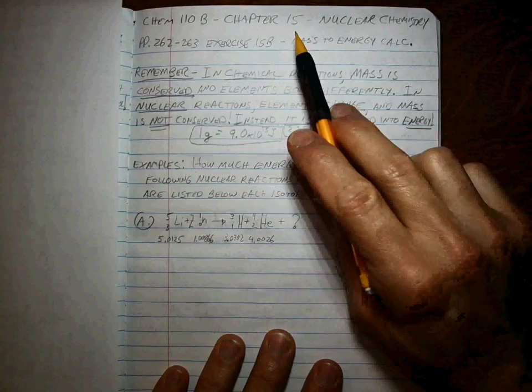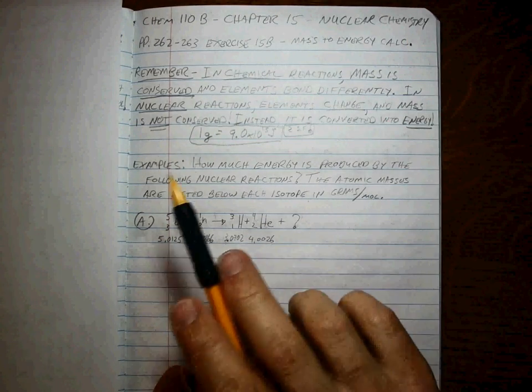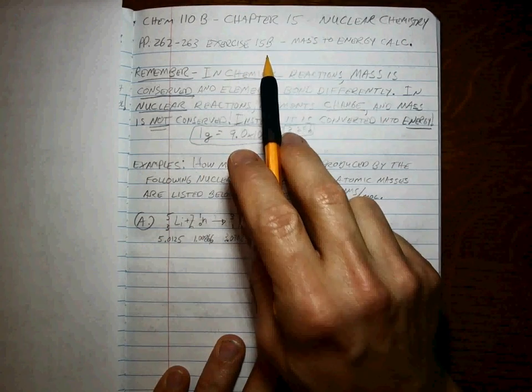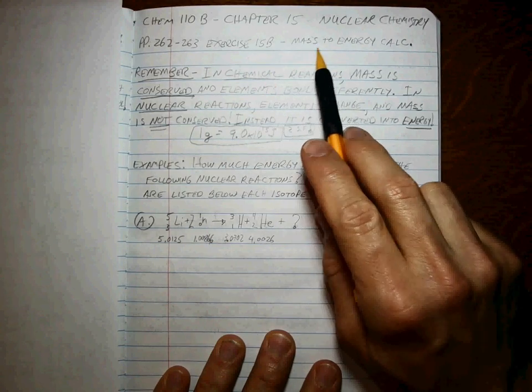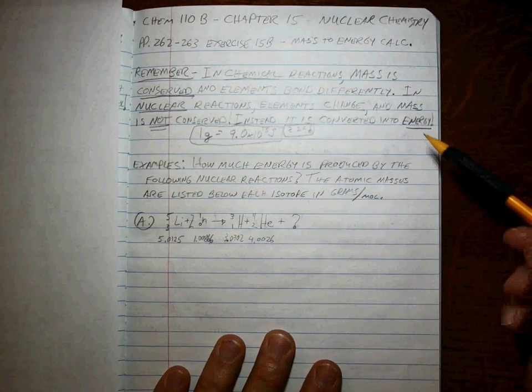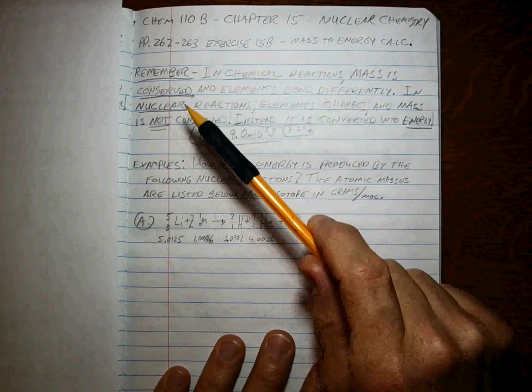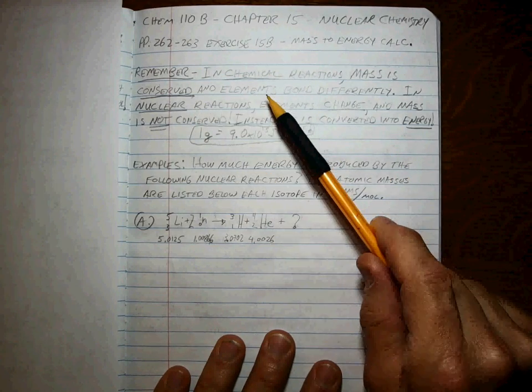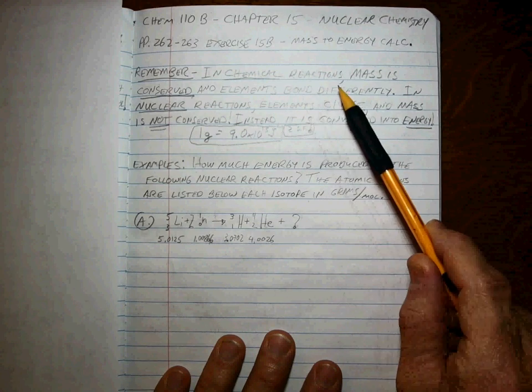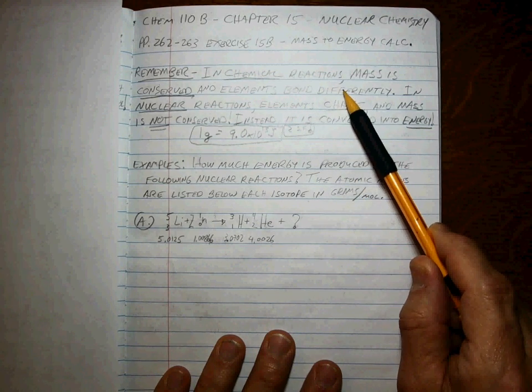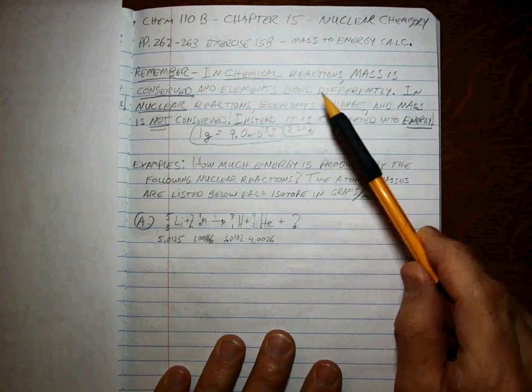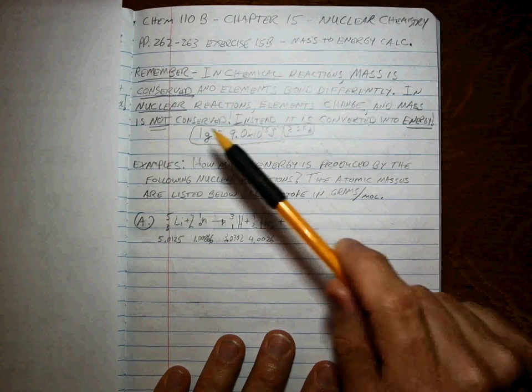Okay guys, Chapter 15 nuclear chemistry. The next kind of problem is Exercise 15B, and it's the mass-to-energy calculation. Key thing to remember is that in a chemical reaction, mass is conserved and all we do with the elements is have them get rearranged. But the same number of elements are found on each side.